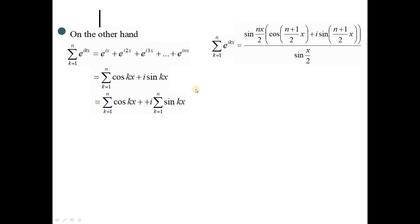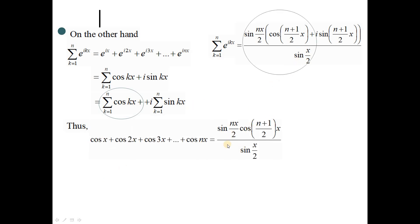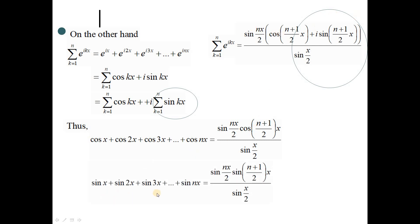Comparing the two sides, the real part gives us the first trigonometry sum: the summation of cos kx from k=1 to n equals sin(nx/2) times cos((n+1)x/2) over sin(x/2). Comparing the imaginary parts gives us the second trigonometry sum: the summation of sin kx equals sin(nx/2) times sin((n+1)x/2) over sin(x/2).